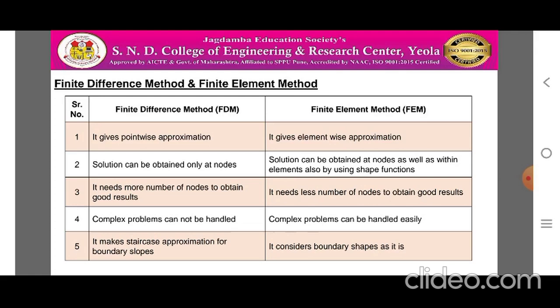Point three: Finite Difference Method requires a larger number of nodes to obtain good results, while Finite Element Method requires fewer nodes to achieve comparable results. Point four: complex problems cannot be handled with Finite Difference Method, while Finite Element Method handles complex problems easily. Point five: Finite Difference Method makes a staircase approximation for boundary slopes, giving approximate step-wise solutions for boundaries, whereas Finite Element Method already considers the boundary shape as it is.